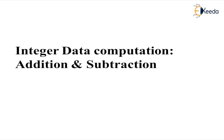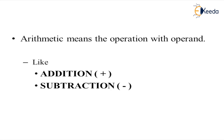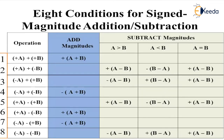So we will be going ahead and looking into the addition and subtraction. You are aware of the different signs — for addition we use plus sign, and for subtraction we use minus sign. Now, there are eight conditions which have been listed for performing addition and subtraction. Let us consider two operators, A and B.